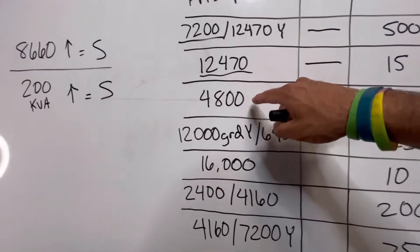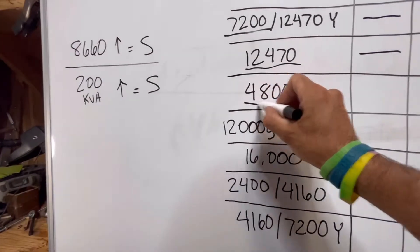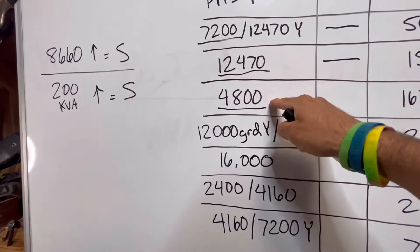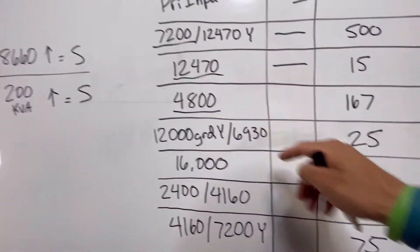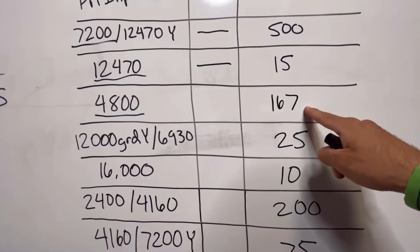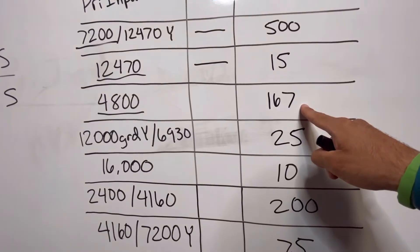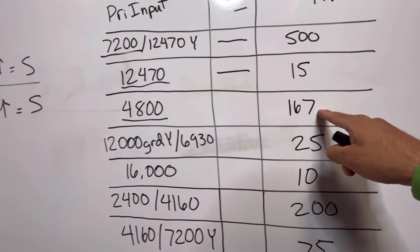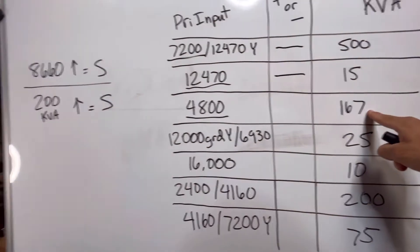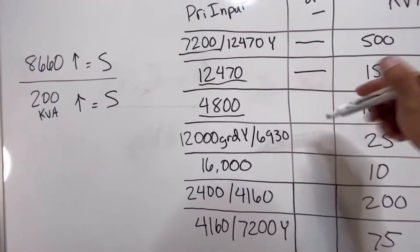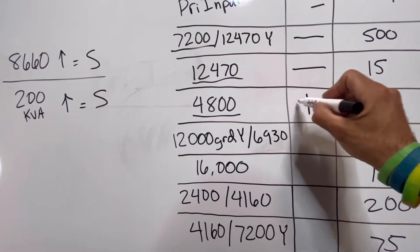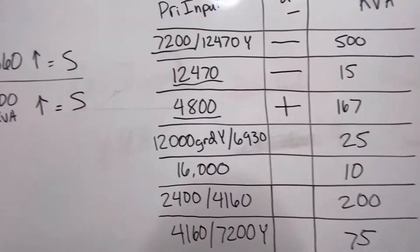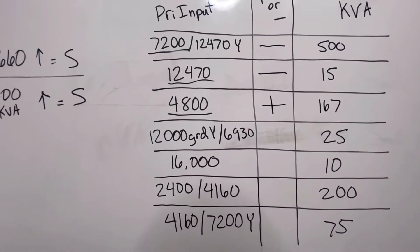Here we have a 4800 volt input — so under 8660. And 167 KVA, which is under the 200 KVA requirement. Therefore, that's an additive transformer.